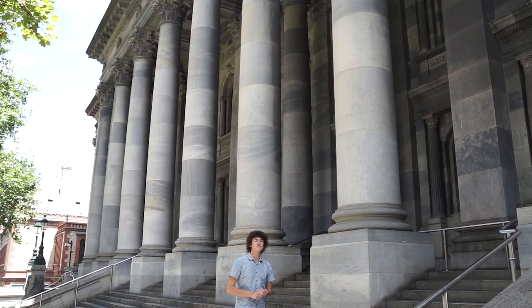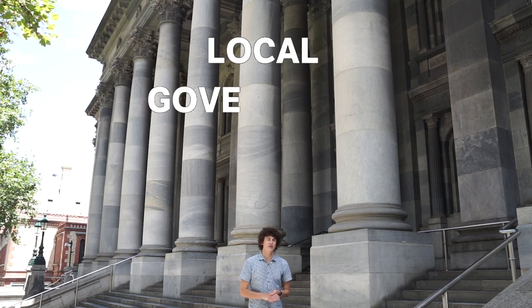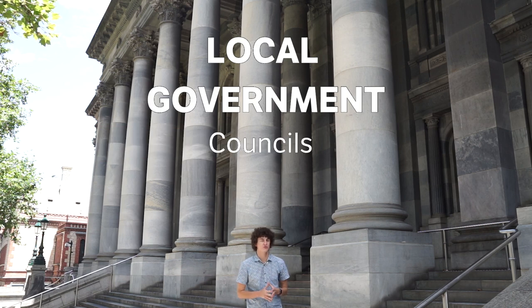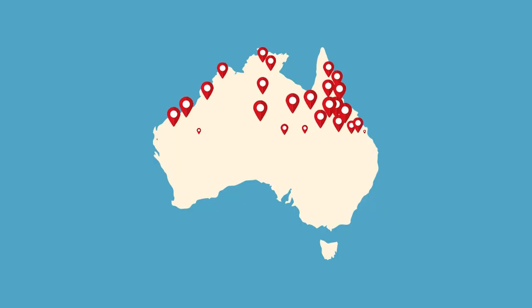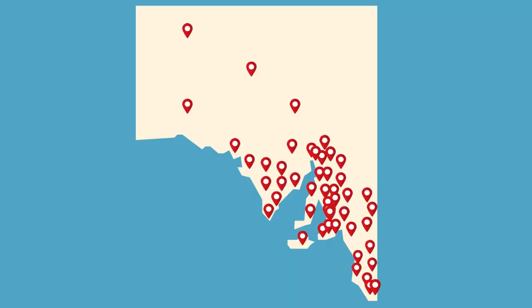But the third level of government is one you might not know much about. It's called local government and it's operated by councils. There are over 500 different councils across Australia with 68 being in South Australia. Local government is what we're going to talk about. We'll talk about how it started, how it operates, who's involved, what decisions they make and most importantly how you can get involved in your local community and make a real difference. It's exciting — let's get started.